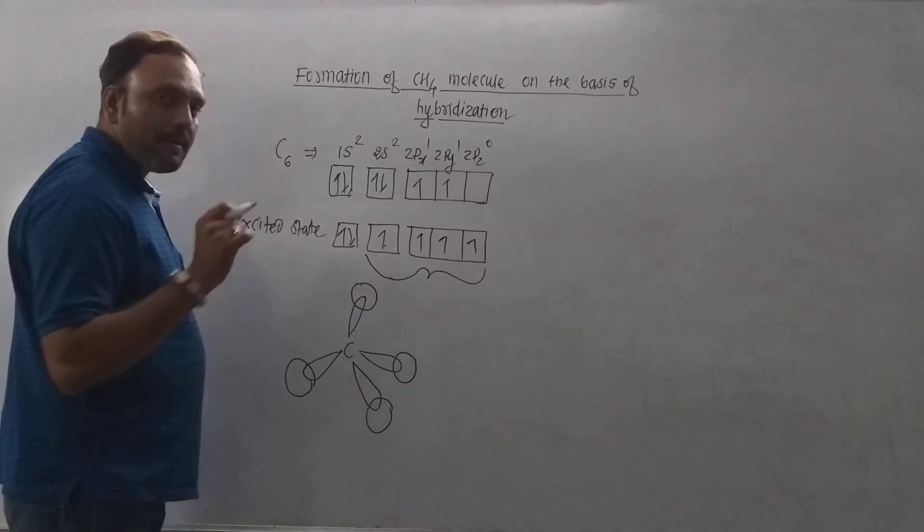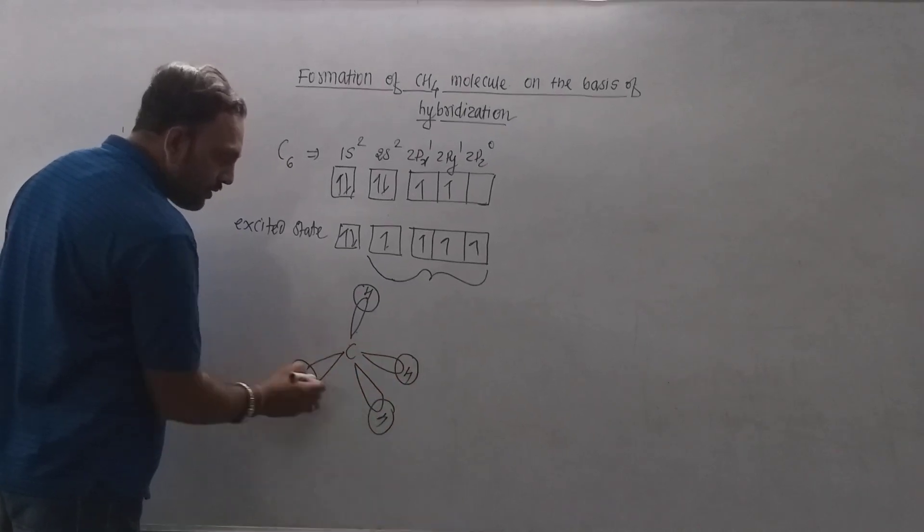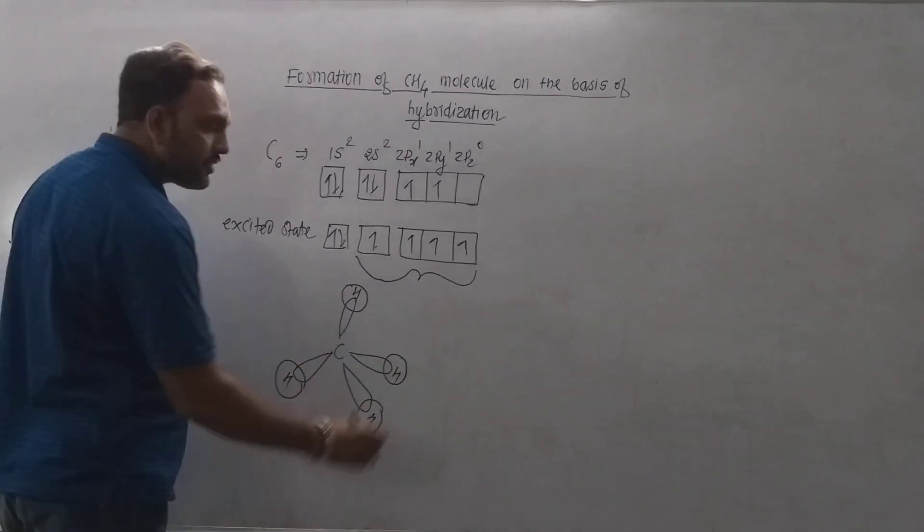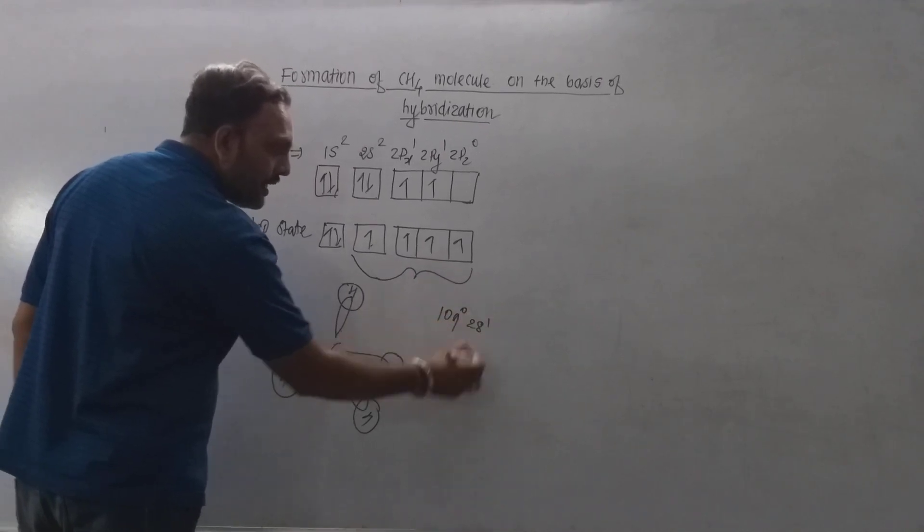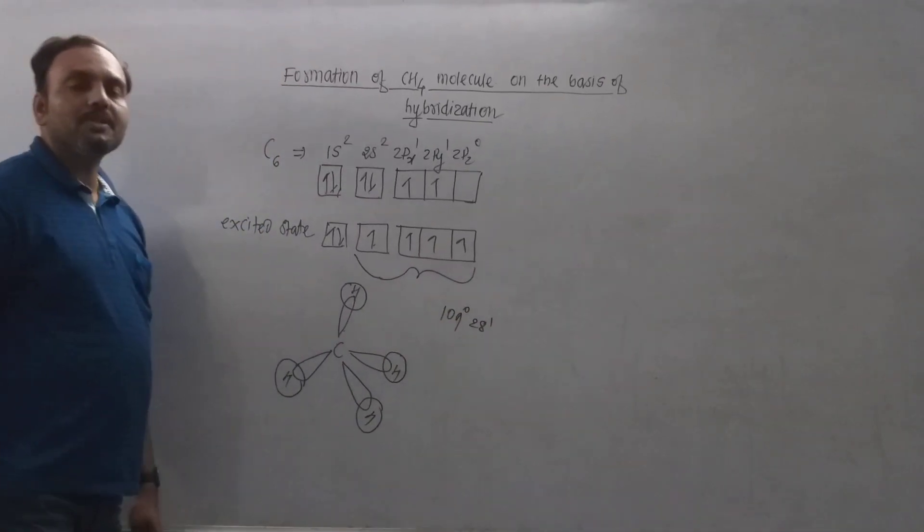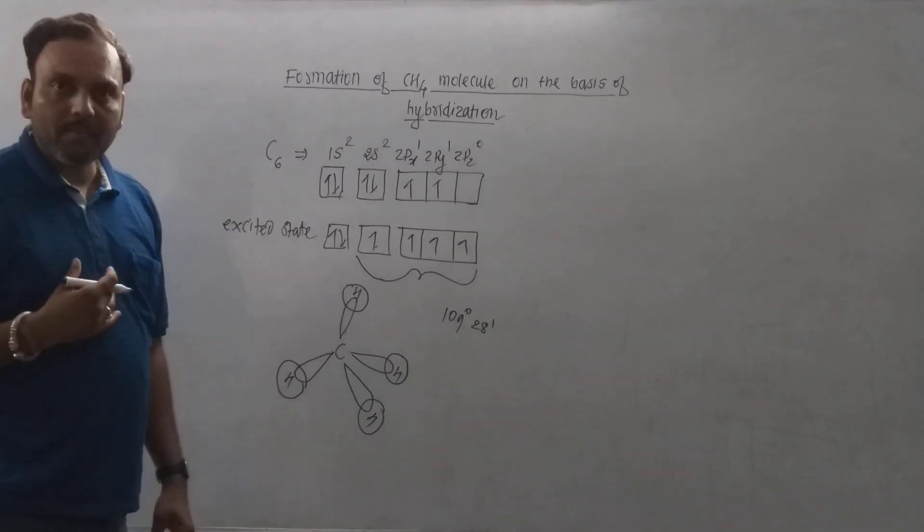So in methane, H-C-H bond angle is found to be 109 degrees 28 minutes and its geometry is tetrahedral. So thank you very much.